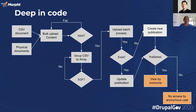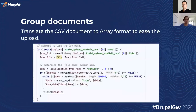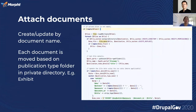The next two slides are the code that we mainly use. The first one is group documents, which translates the CSV document to an array format for easy upload. The second is attach documents, where we create the file and move them to the rightful folder.